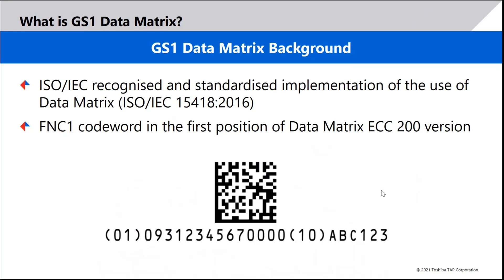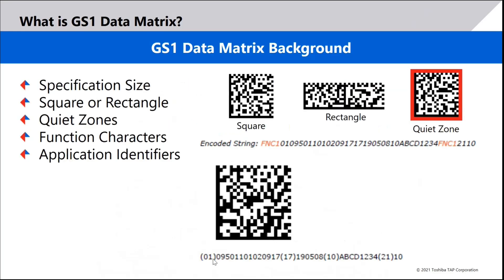The GS1 Data Matrix creates something different from the similar 1D shipper codes we've seen in the past, such as GS1-128. Similar to a regular GS1 1D shipper code that utilizes function characters and application identifiers, the GS1 Data Matrix brings the same functionality in 2D, allowing it to be used in all sorts of environments — from retail to transport, logistics, and track and traceability. Unlike a standard Data Matrix where you can put in whatever you want, GS1 Data Matrix codes have a full set of guidelines you must follow.